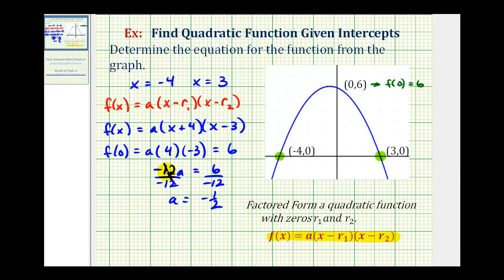Therefore our function in factored form would be f of x equals negative one-half times the quantity x plus four times the quantity x minus three. This would be the quadratic function graphed here with the given intercepts.